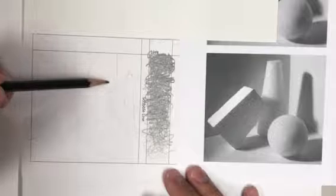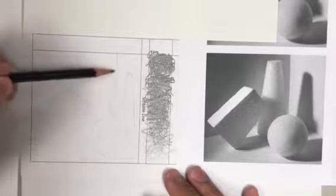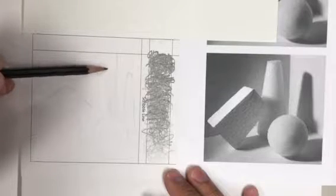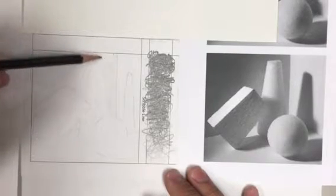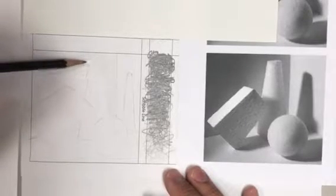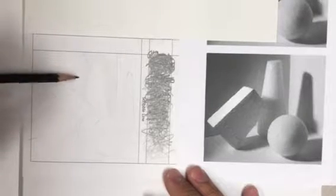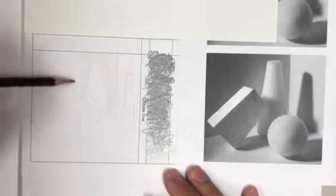Holding the pencil towards the back, I'm making a very erratic scribble line. Notice I'm going against the cone, going against the edge of the cone, so I'm able to control my line as I get to that edge to start to create the edge of the cone. I'm not going to use a line to define the objects, I'm using value.